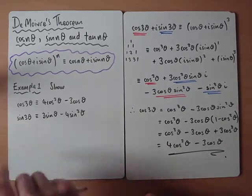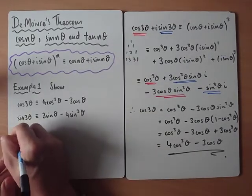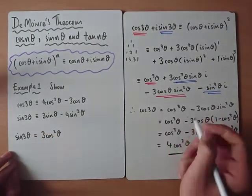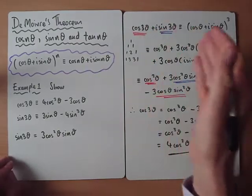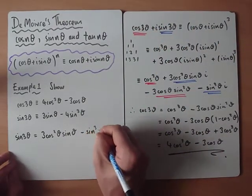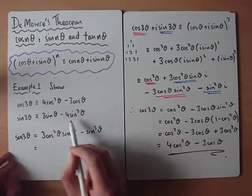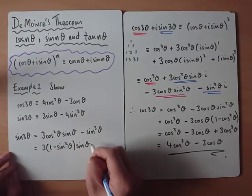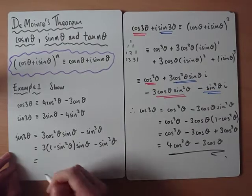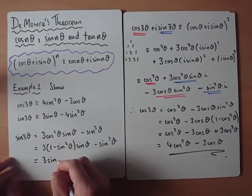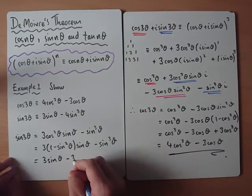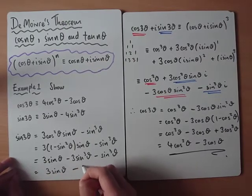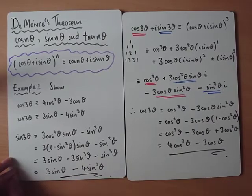Similarly, looking at the imaginary coefficients gives sin 3θ = 3cos²θ sinθ − sin³θ. Note you don't include the i — just the coefficients. To express this in terms of sinθ, replace cos²θ with (1 − sin²θ): giving 3sinθ(1 − sin²θ) − sin³θ = 3sinθ − 3sin³θ − sin³θ = 3sinθ − 4sin³θ.